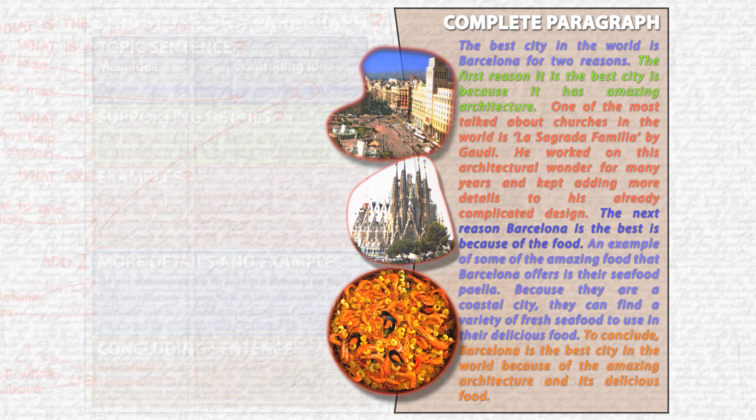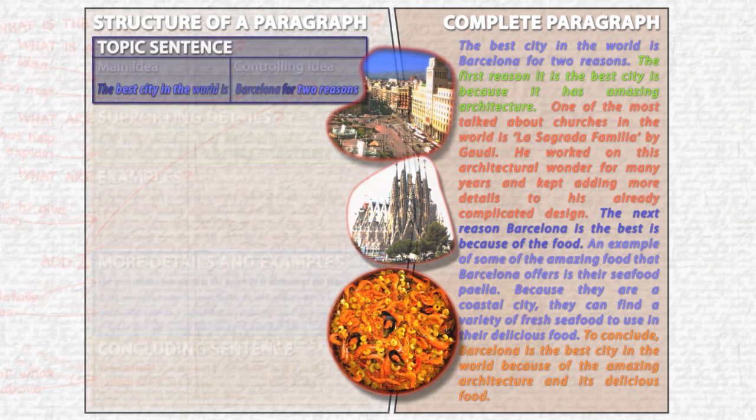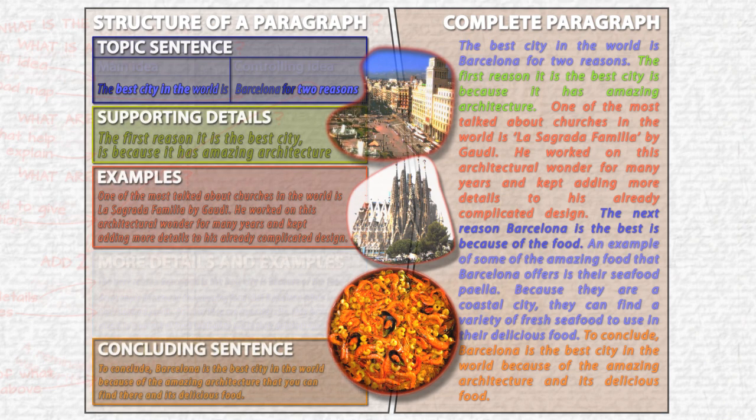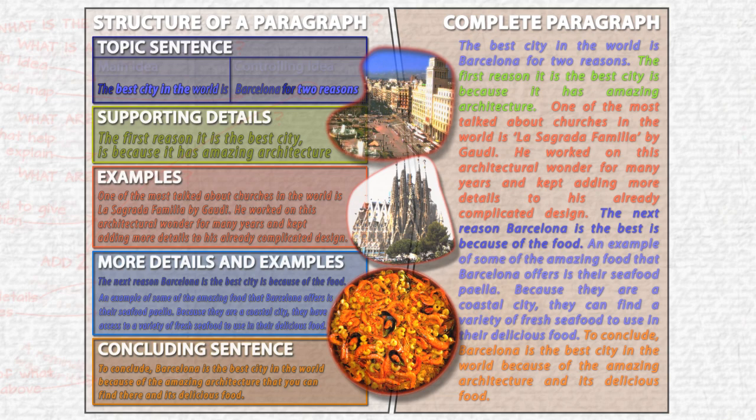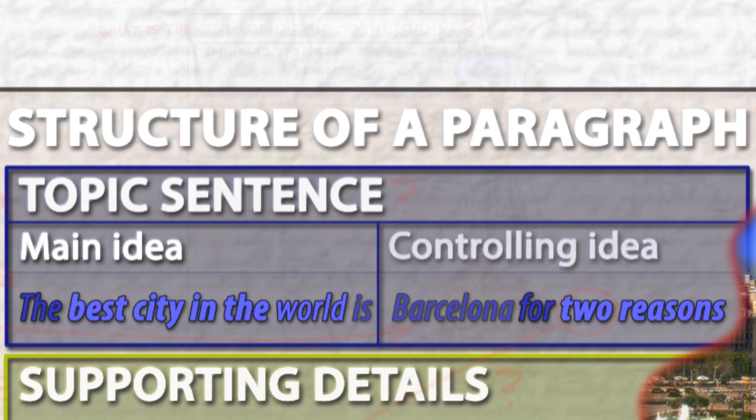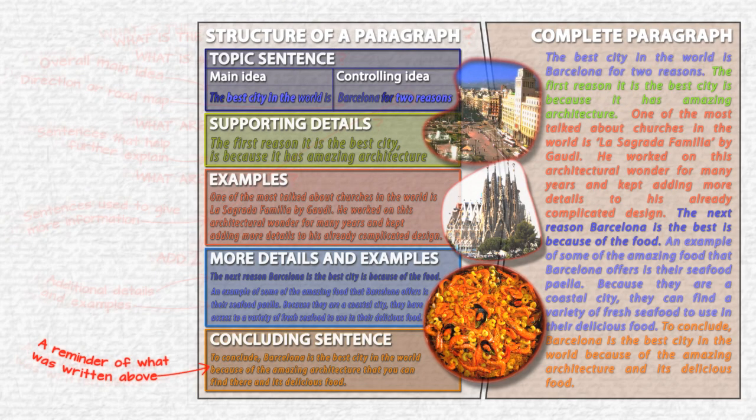So, what did we learn today? Paragraphs have a topic sentence, supporting details, examples, and a concluding sentence. The topic sentence has two main parts. One, main idea, and two, the controlling idea. A concluding sentence restates the topic and summarizes the paragraph.